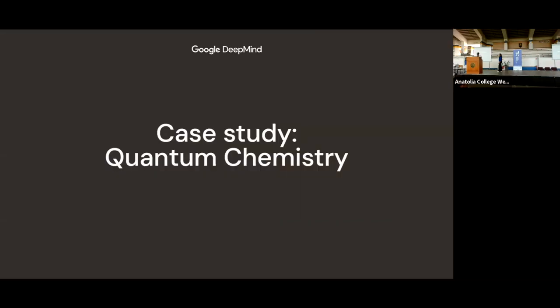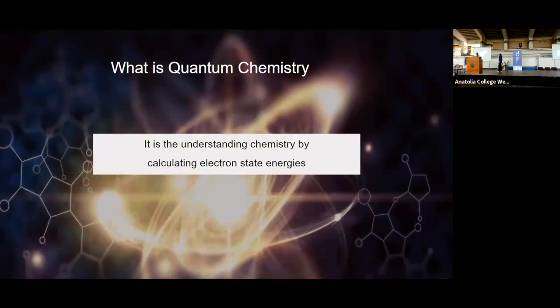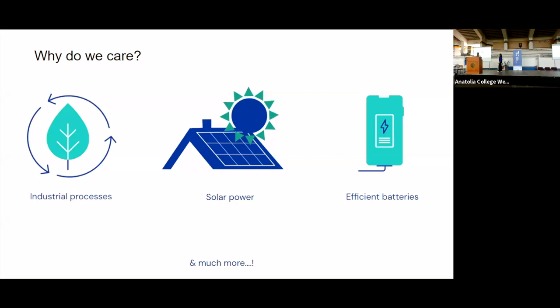And so to bring this to life a little bit more, I'm going to dive into a specific case study, which is AI for quantum chemistry, which I mentioned already is an area that we're really passionate about at Google DeepMind. And I'm going to apologize in advance for any quantum chemists in the audience for the very oversimplified explanations I'm going to give. But we'll start at the very high level, what is quantum chemistry? Essentially, it's just trying to understand chemistry by calculating the energy of electrons across different states. And there's plenty of reasons why understanding quantum chemistry is super interesting and important. And some of the reasons that we care about, particularly at DeepMind, are related to some really fundamental challenges that we think, if unlocked, could have widespread impact across society.